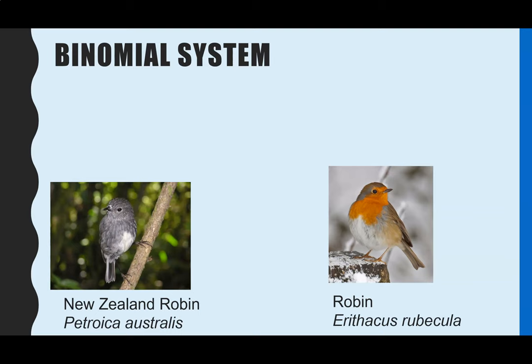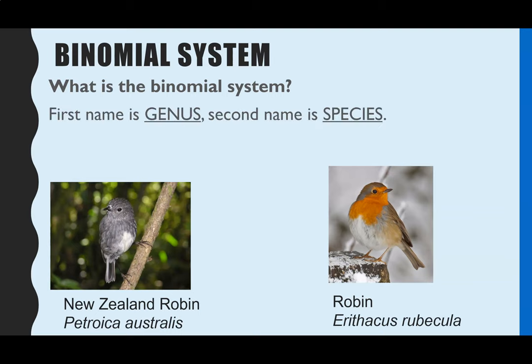We'll begin with the binomial system, which is the way that you can name organisms. It's a universal method, so regardless of the country or language, all scientists will follow the binomial system. An organism is named with two parts: the first part is their genus and the second part is the species. Binomial means two names — bi means two, nomial means name.